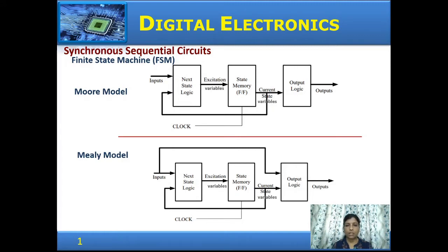Both models are similar — both have inputs, outputs, and internal states, and the memory elements used are flip-flops. The difference is that in the Moore model, the output depends only on the current state of the flip-flops, whereas in the Mealy model, the output depends on the current state of the flip-flops as well as the inputs.